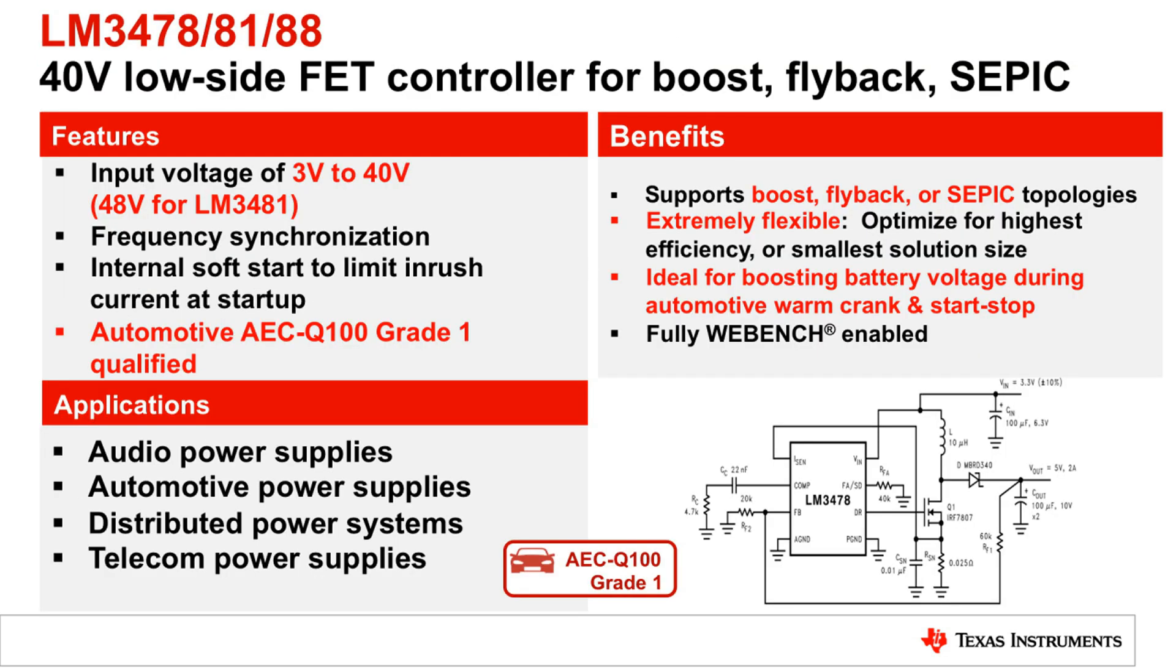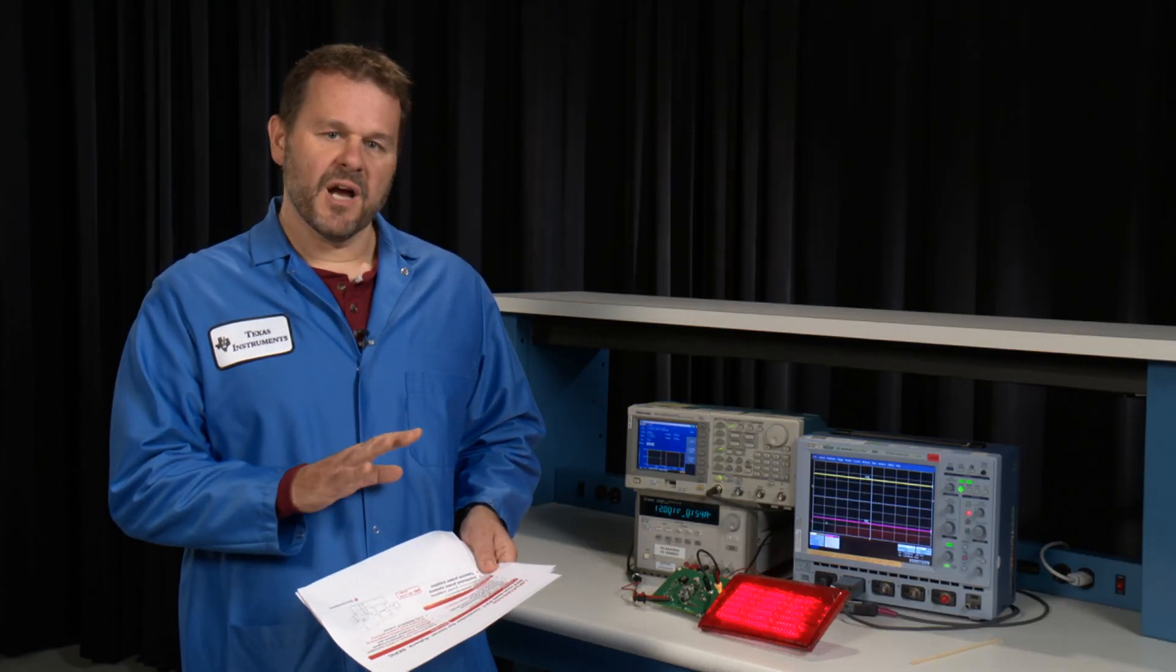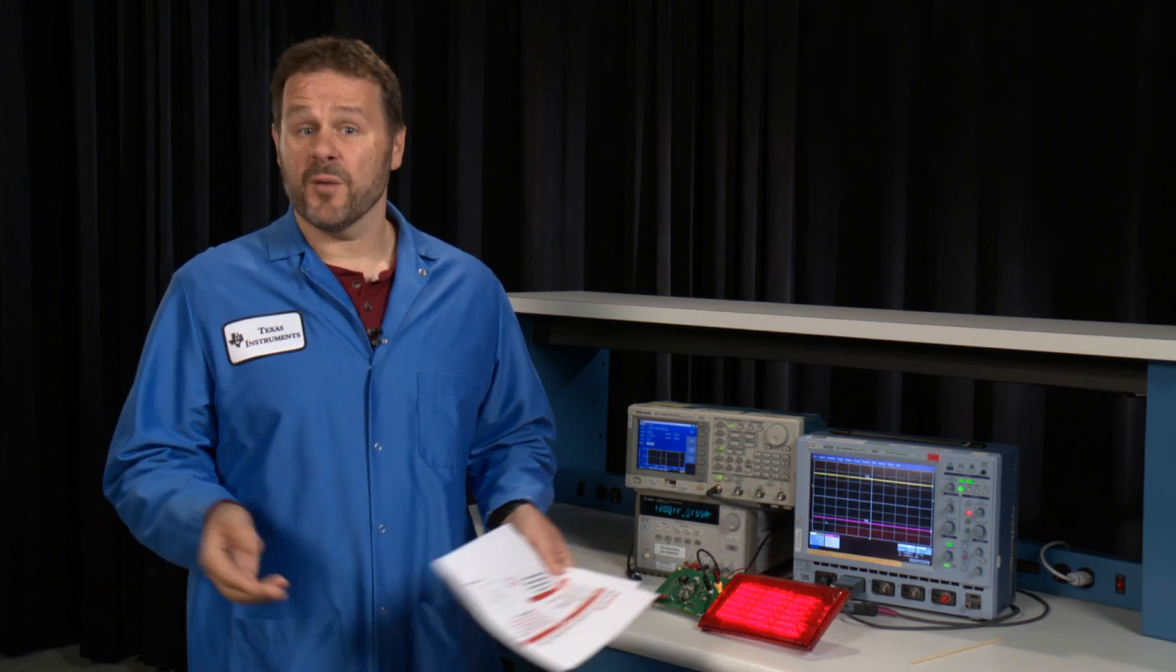So we chose the LM3481 because it had a wide VIN range, particularly on the high side because of conditions like load dump conditions, and also on the low side as well, it can work down to 3 volts. This is very competitive in the market and useful for start-stop type applications. Also, it's very configurable, and you'll see that from the circuit designs that I'll be showing later on.